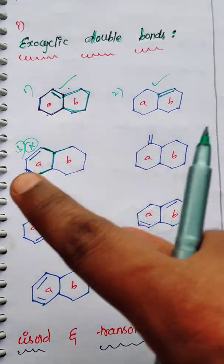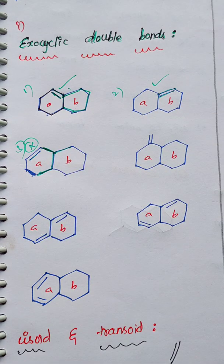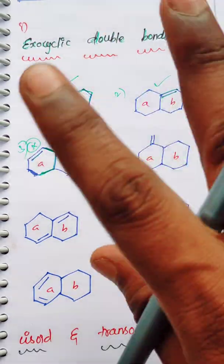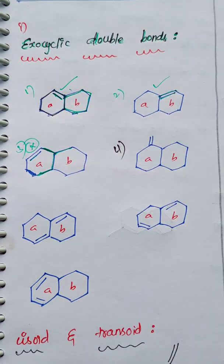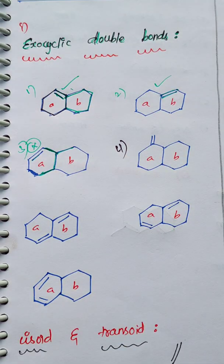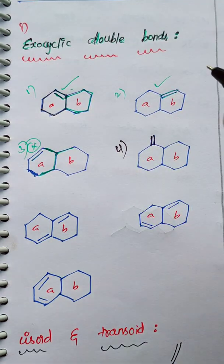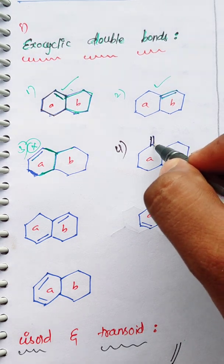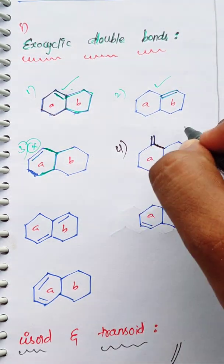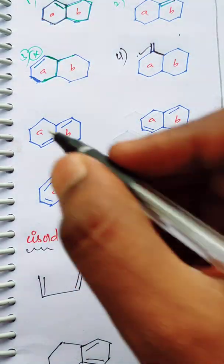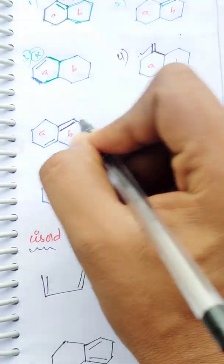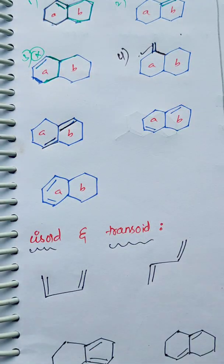In this case, for ring B there is no exocyclic double bond. Now come to the fourth one — here there are two ring systems, A and B. For ring A there is one exocyclic double bond, but for ring B there is no bond. In the fifth and sixth compounds, for ring A an exocyclic double bond is present, and for ring B an exocyclic double bond is also identified and analyzed.